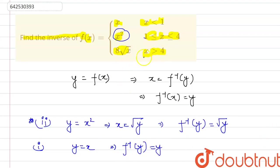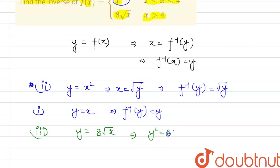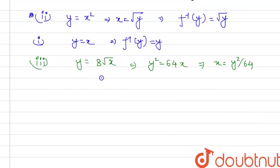Finally, for the third case, whenever x is greater than 4, our f(x) is 8√x. Replacing f(x) with y, we get y equals 8√x. We will write down x in terms of y. Squaring both sides, we get y² equals 64x. That is, the value of x will be y²/64. So we can write f inverse of y equals y²/64 in this case.